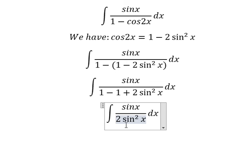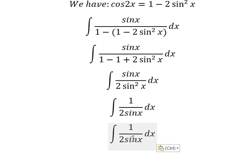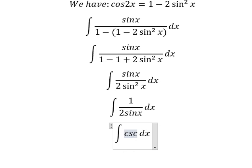Sin x over sin x, we simplify. 1 over sin x, that is cosecant of x over 2.